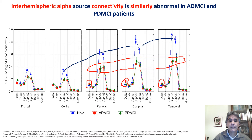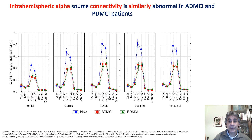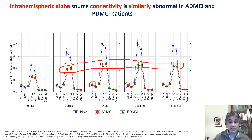Very similar results were found in the intra-hemispheric source connectivity analysis in Alzheimer's disease with MCI and Parkinson's disease with MCI. There was a reduction in alpha source connectivity in both groups, but no difference between Alzheimer's disease and Parkinson's disease, and again no increase in delta source connectivity in either patient group.